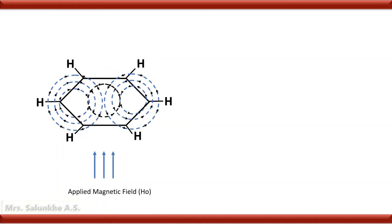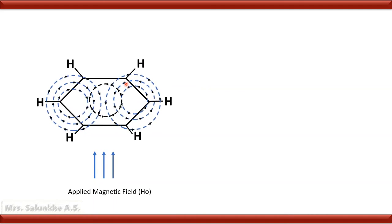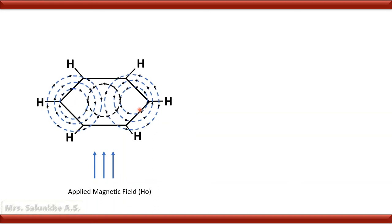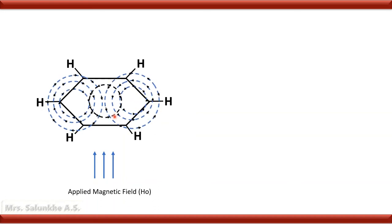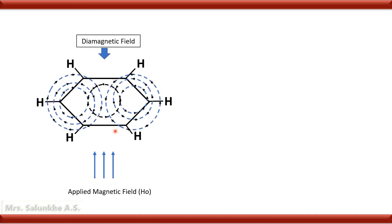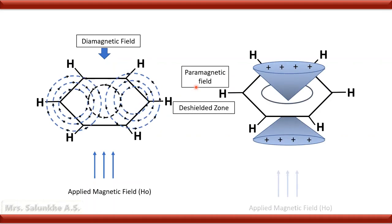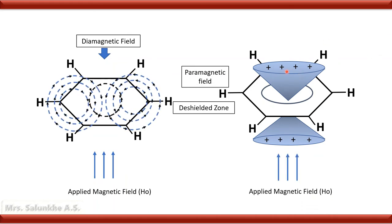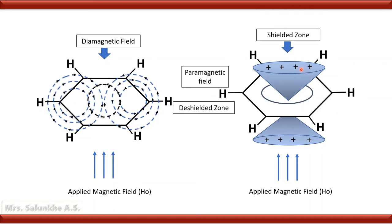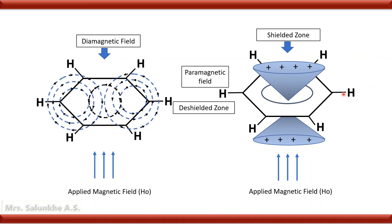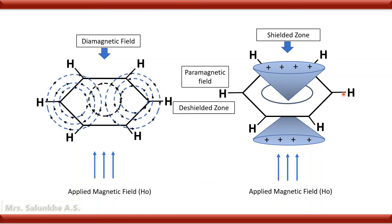When the benzene molecule is placed in the applied magnetic field, the pi electrons circulate and a secondary magnetic field is generated. That secondary magnetic field orients such that it is anti-parallel to the applied magnetic field above and below the plane of the ring, creating a diamagnetic field. At the periphery of the ring, there is a paramagnetic field, and the protons are present in that paramagnetic region — therefore they are highly deshielded. The cup and cone arrangement clearly indicates the shielded zone above and below the ring, while the protons present on the aromatic ring are in the deshielded zone.